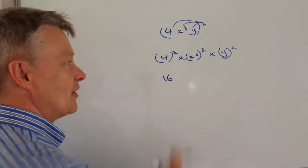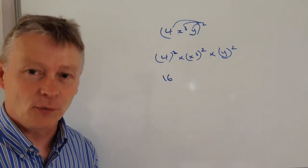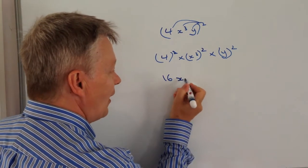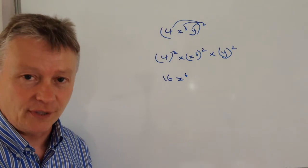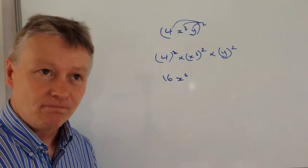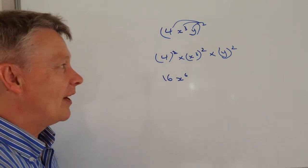And then we've got x to the power of 3 squared. Well, the way the laws of indices work, that means x to the power of 6 because we multiply those two indices together. And then finally, I've got y to the power of 1, if you like, y squared.